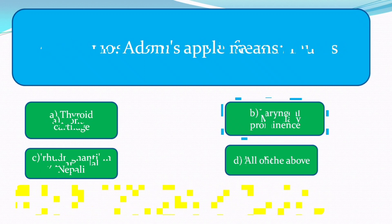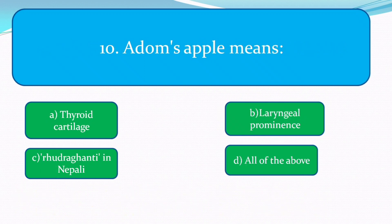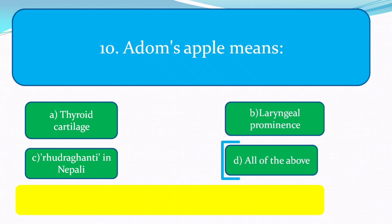Adam's apple means the laryngeal prominence, which is also called thyroid cartilage or 'Rudraghanti' in Nepali. The correct answer is all of the above.